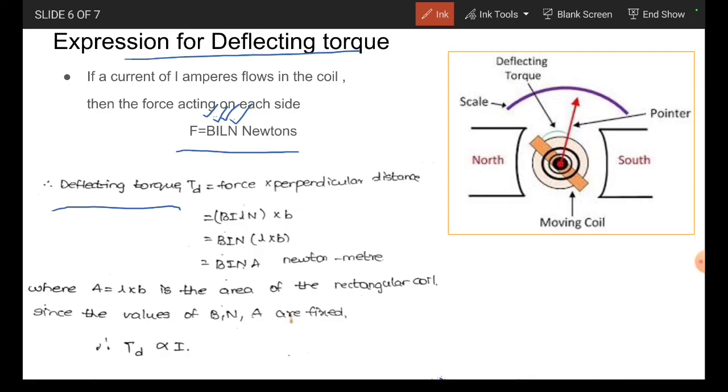Therefore, the deflecting torque Td is equal to force into perpendicular distance. The perpendicular distance is b. The force is BiLN, and the perpendicular distance is b. I simply by rearranging here: BiN L into b.